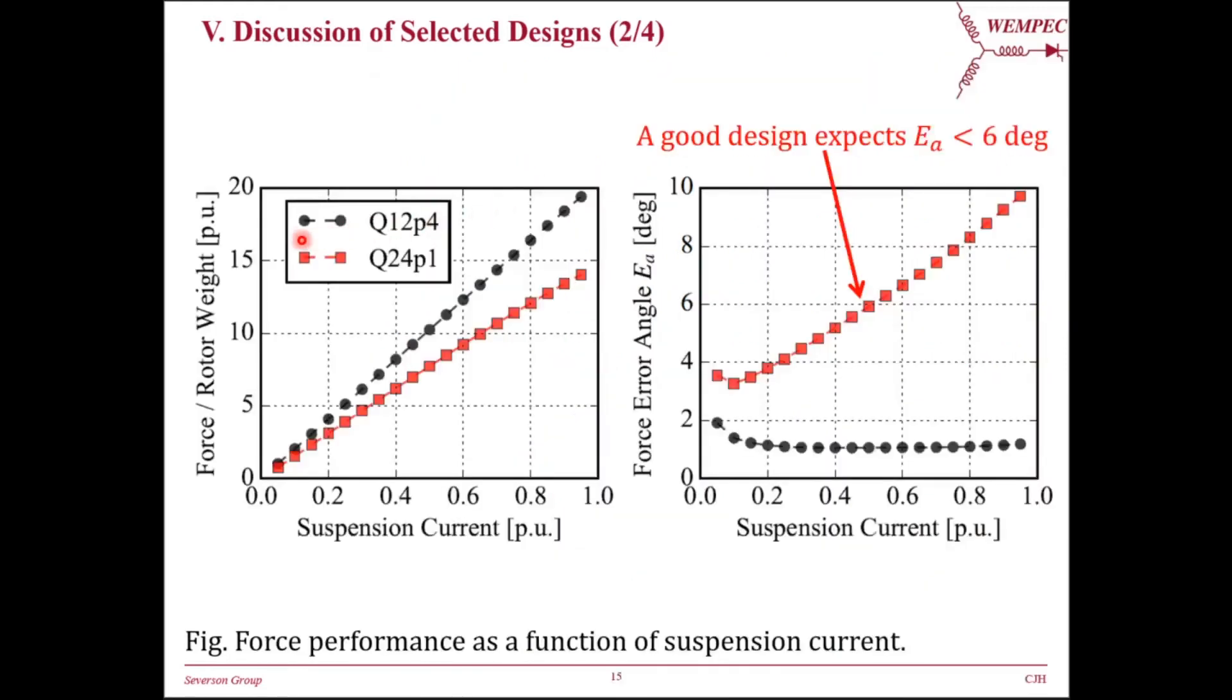Next, the force capability versus suspension current is shown for both selected optimal designs. The maximum force at rated current for Q12P4 design is about 20 times of the rotor weight. The linearity indicates both motor designs are good bearingless motorized candidates. In the second plot, the force error angle of the Q12P4 design decreases as suspension current increases, which is a great property because we expect a good bearingless design mode to have a force error angle less than 6 degrees.